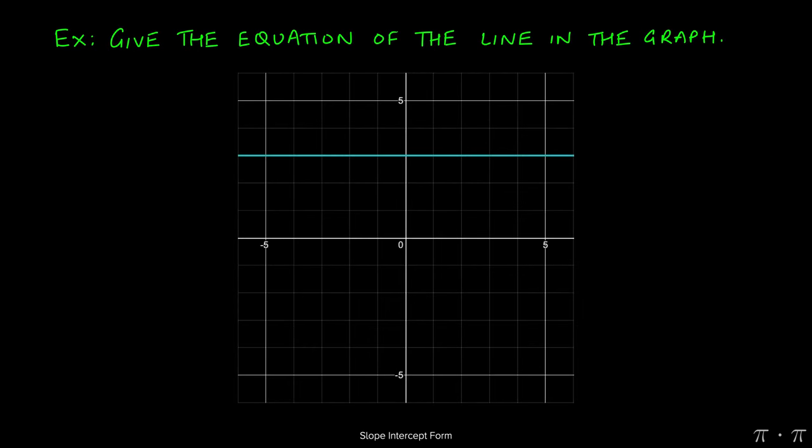Let's say we're asked to find the equation of this line. First, we observe that this is a horizontal line, and it's three units — one, two, three units — above the x-axis.